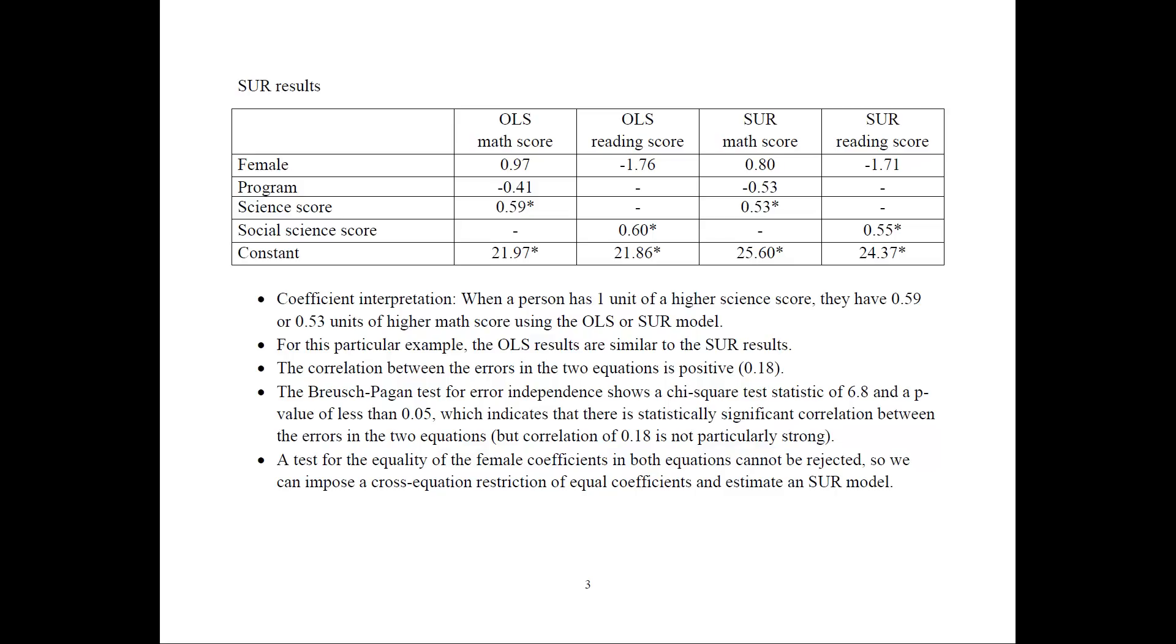So here are the results that we get. Here are the dependent variables, math score and reading score. This is a separate regression, this is a separate regression, and this is the two equations estimated together as an SUR model.